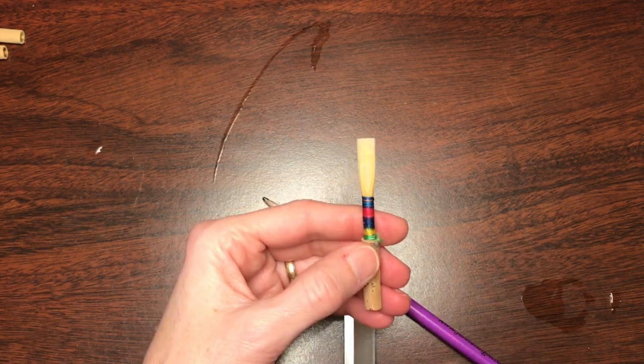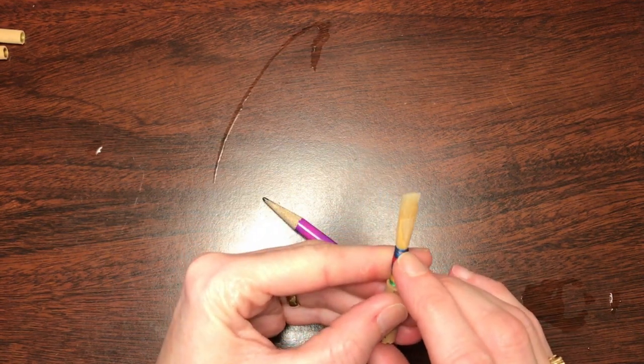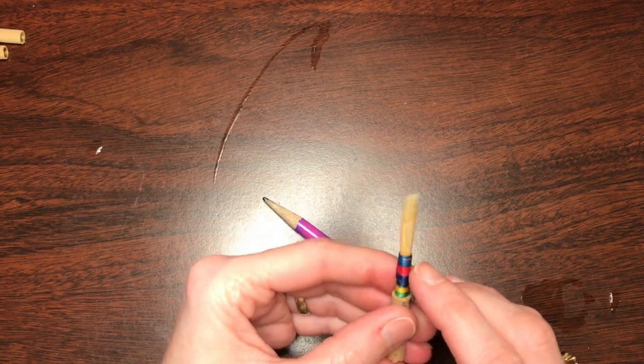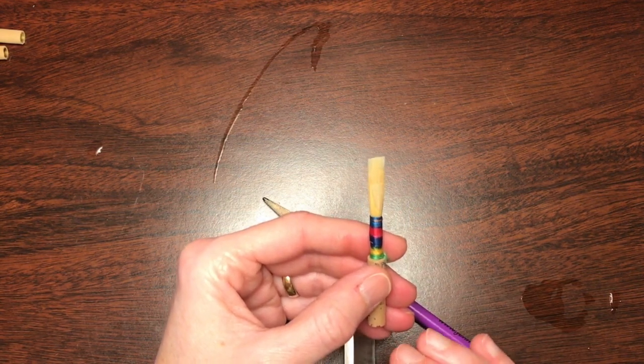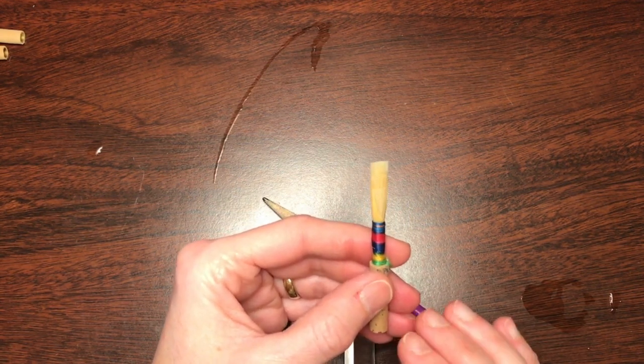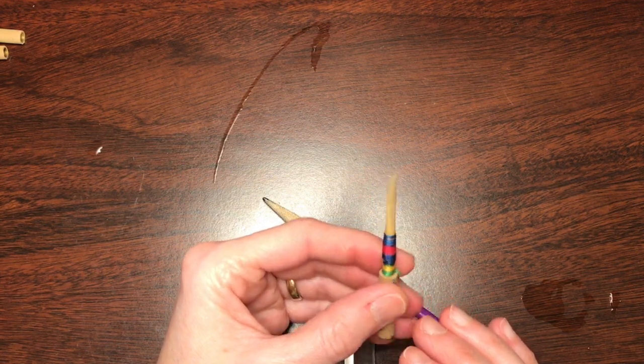And this is so subtle, right? This is all within one half wind of thread. One half of the width of a strand of thread is the distinction I'm looking at here.